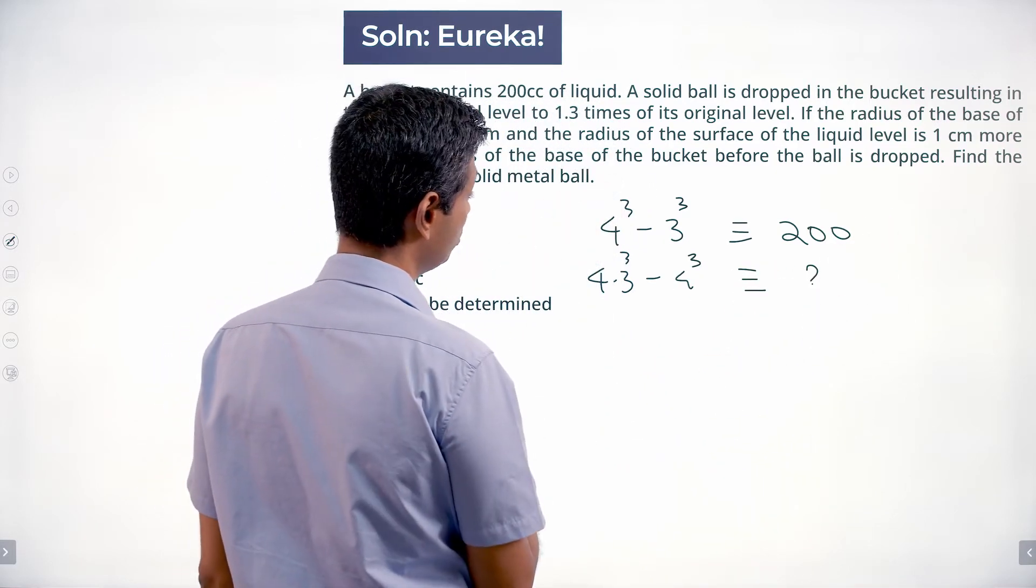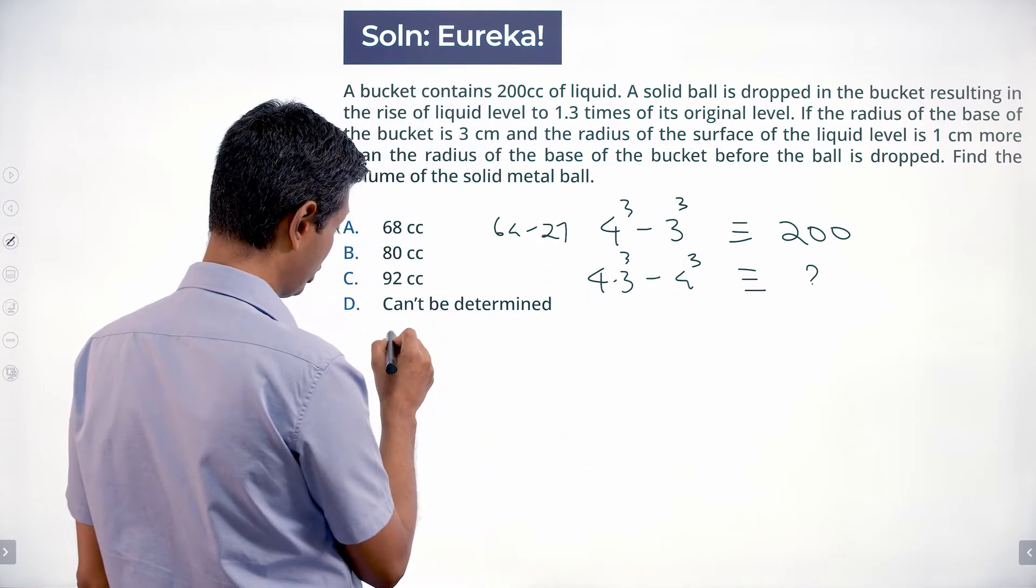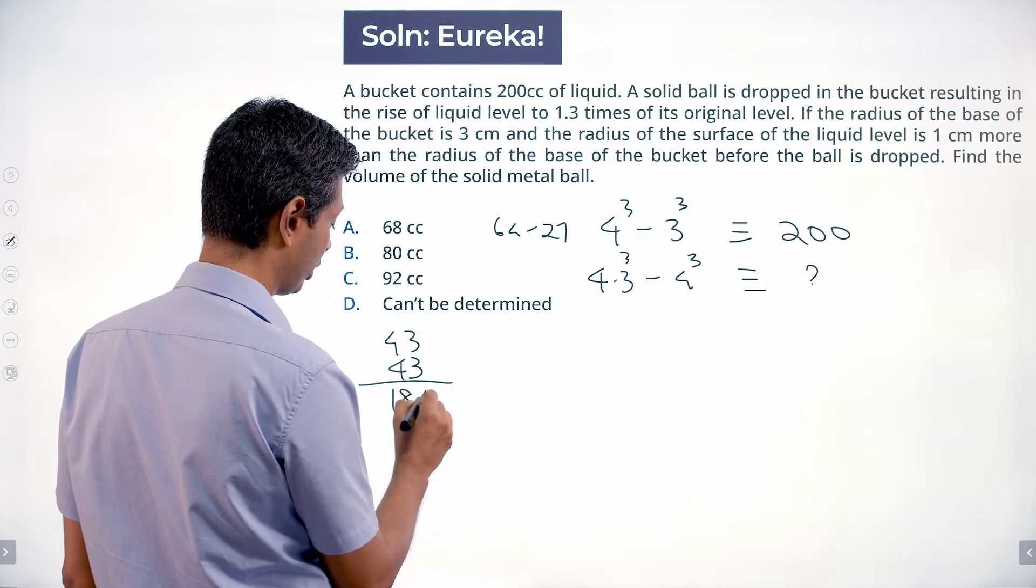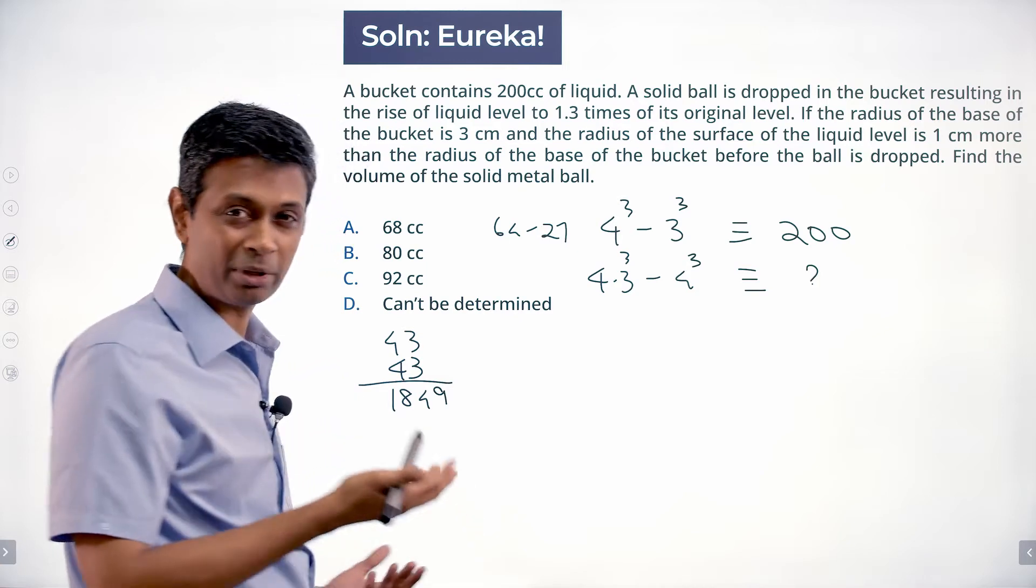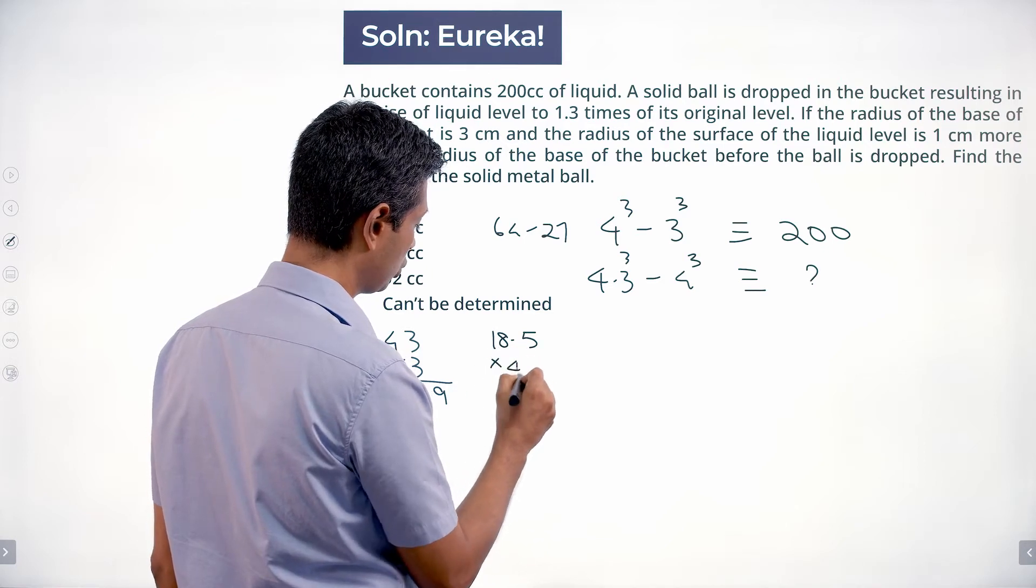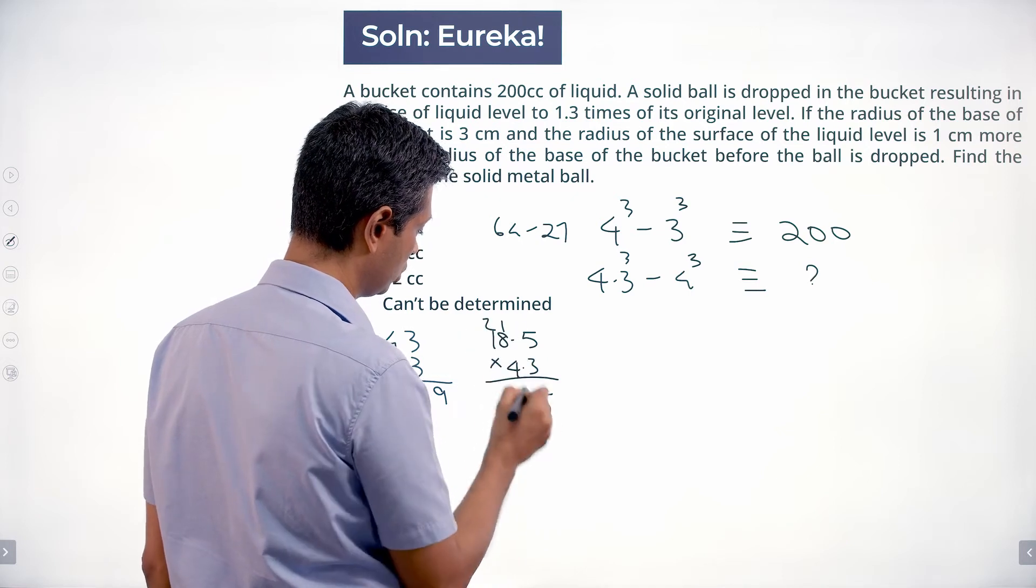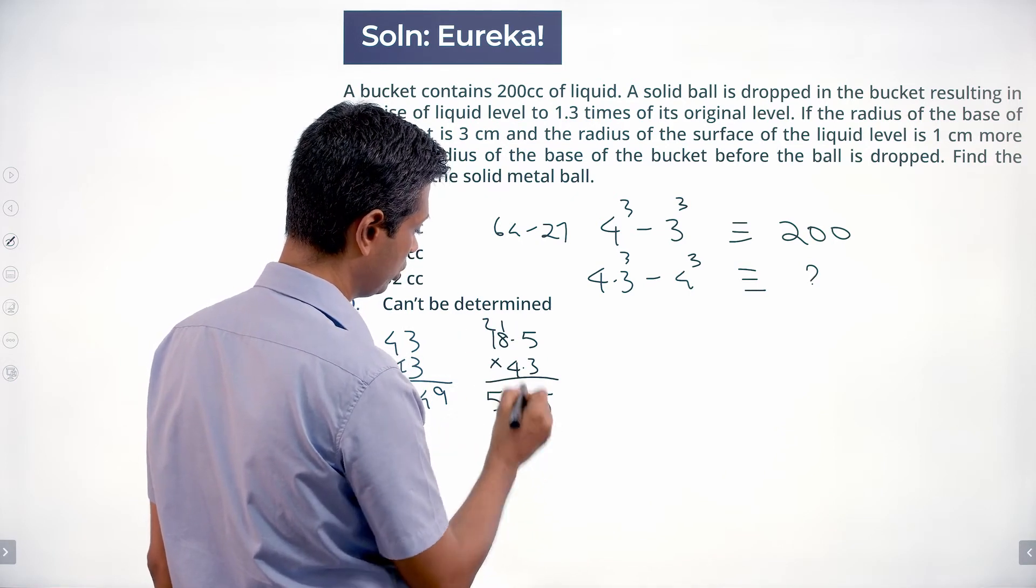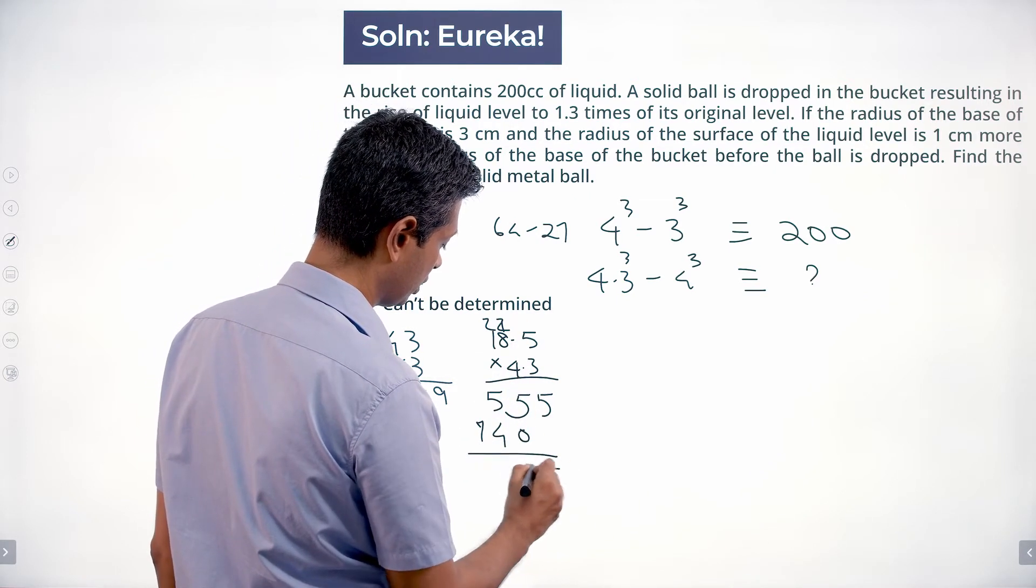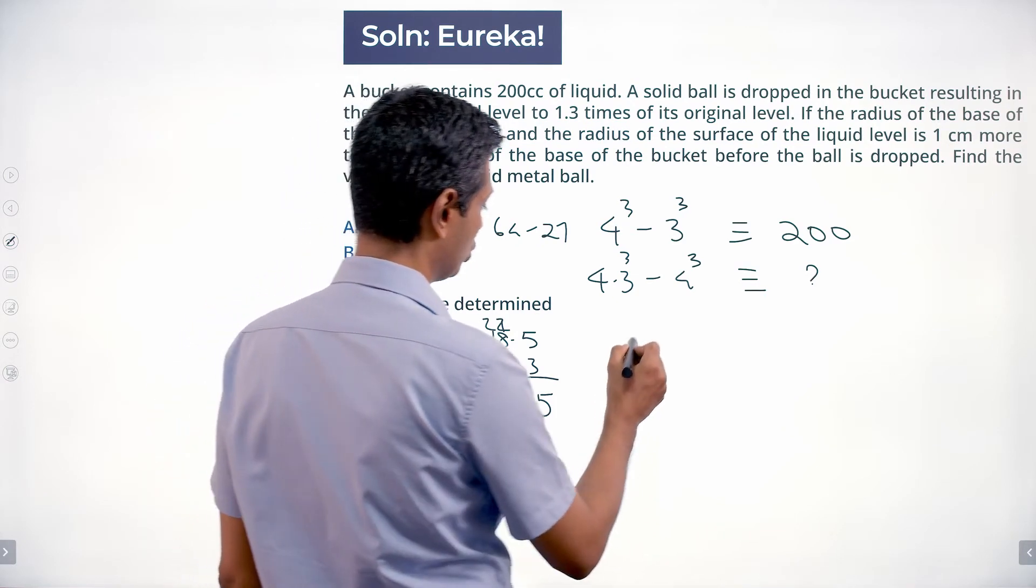This is easy: 4³ is 64 minus 27. This is the pain in the neck, 4.3². 43², 43 × 43, I know this is 1849. Otherwise you can multiply and find out. I'm going to take this as 18.5. 18.5 × 4.3: 3 fives are 15, carry 1, then 24, 25, so on, working through to get 79.5. So we have 64 and 79.5 minus 64.